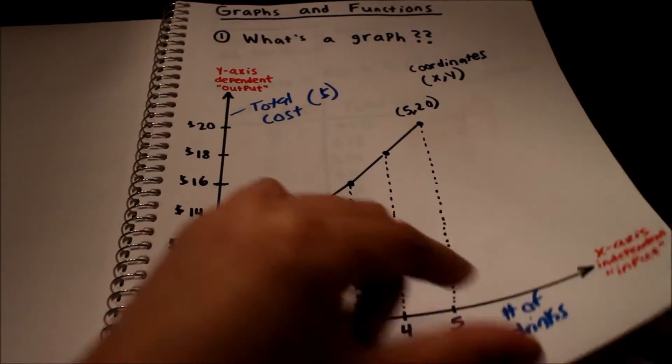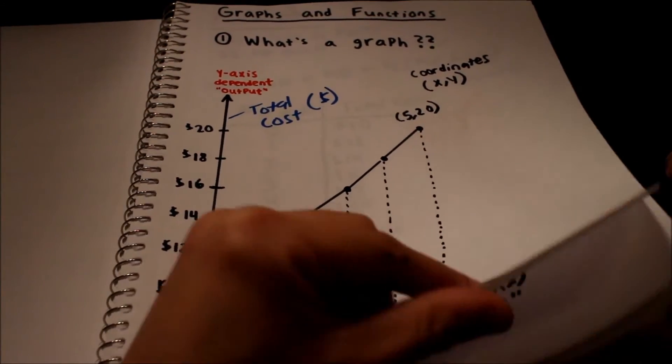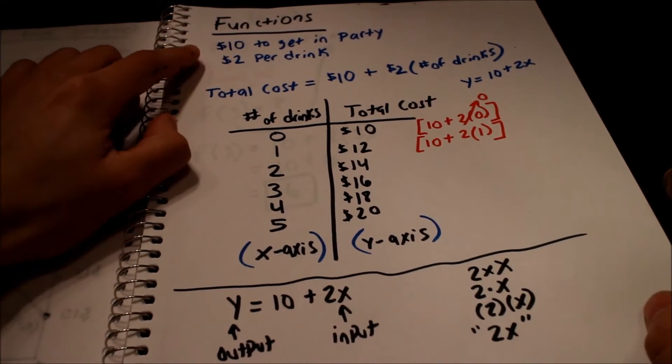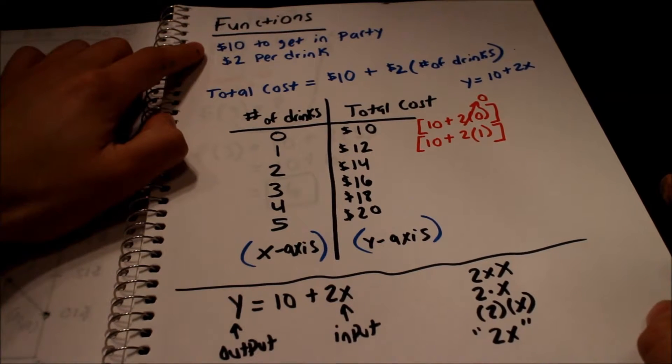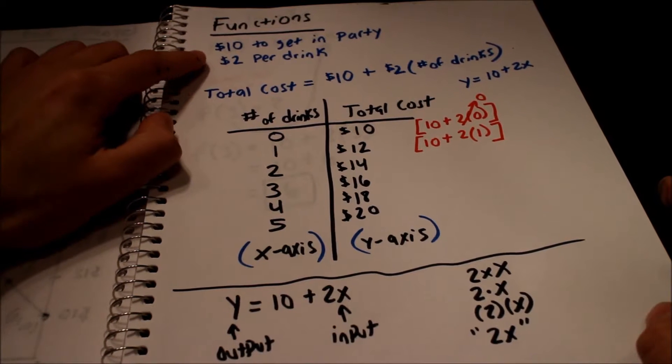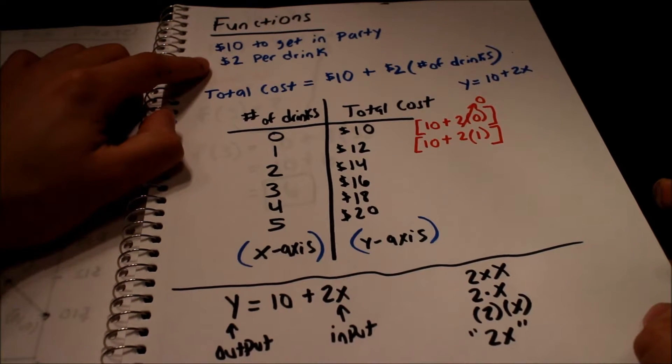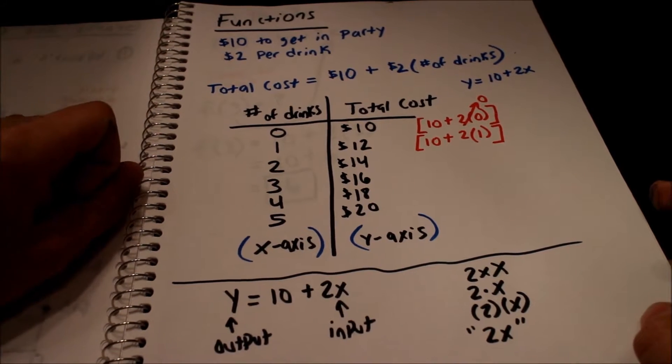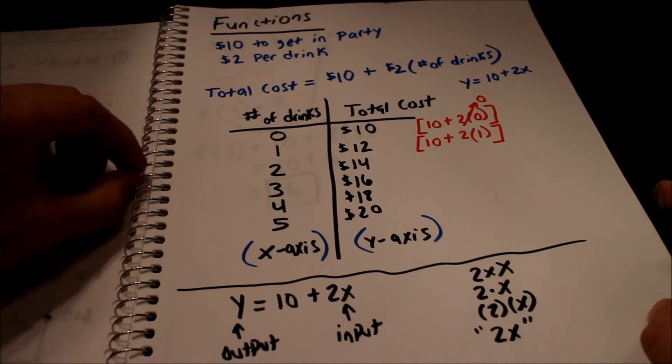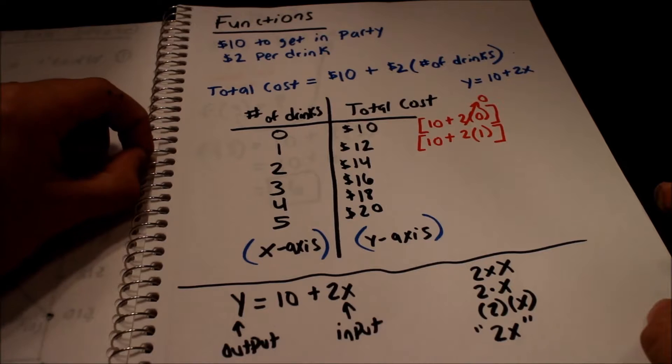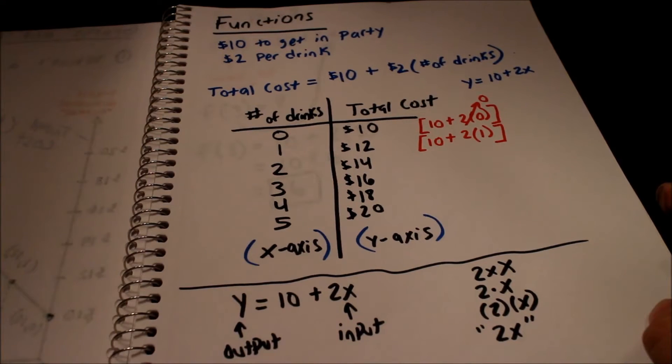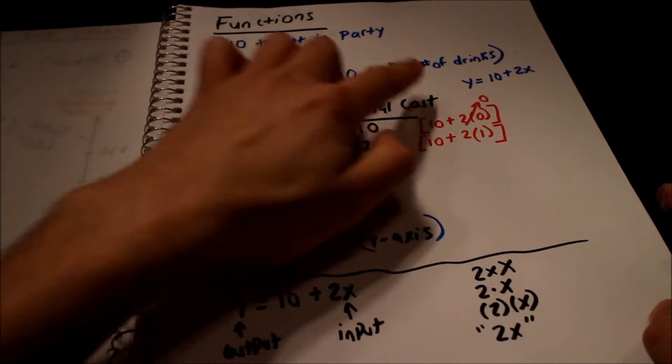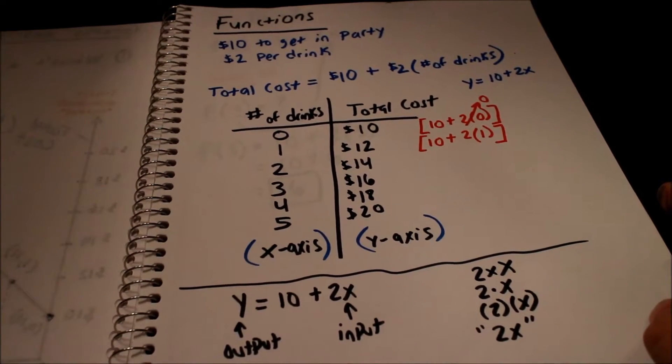We looked at what a graph is, the different axes, coordinates, what all that stuff means. We made up an example where we said it's $10 to get into a party and they charge an extra two bucks for every drink you have. So we created this thing called a function where you can basically compute what your total cost is going to be as a function of the number of drinks you have. So the total cost is your output where the number of drinks is your input.